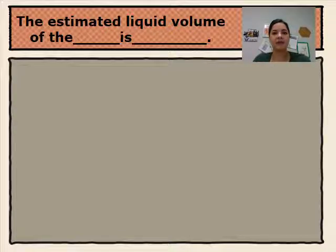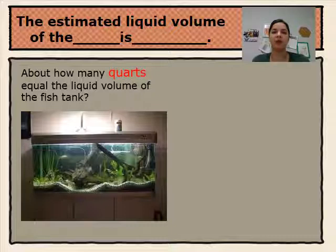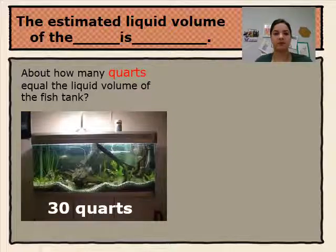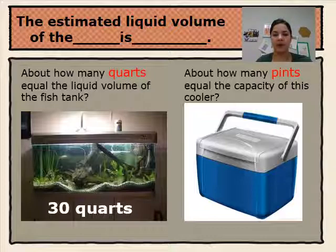I'm going to use this sentence stem to estimate the relative size of the liquid capacity in different containers: 'The estimated liquid volume of the blank is blank.' About how many quarts equal the liquid volume of this fish tank? The estimated liquid volume of the fish tank is about 30 quarts. About how many pints equal the capacity of this cooler? The estimated liquid volume capacity of this cooler is about 15 pints.